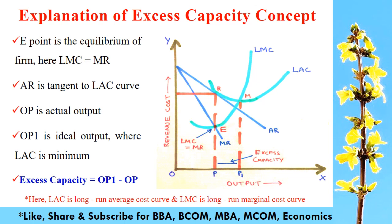The main reason for excess capacity is that in long run equilibrium, the firm will produce that quantity of output at which it is earning neither supernormal profit nor incurring losses, but getting only normal profits.